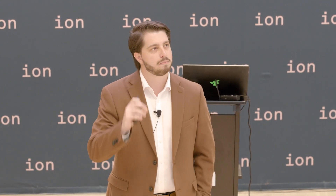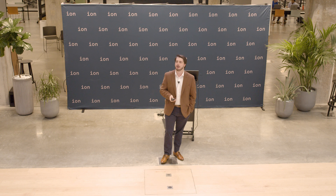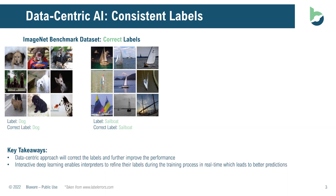Rather than focusing on the algorithm — whether it's a U-Net or an E-Net — we focus on the labels and try to make those as best as possible. You train the model, do your error analysis, and then you tune your data and fine-tune your labels. That's the key difference between model-centric versus data-centric, and that's what we're doing at BlueWare. Specifically, this allows us to do something we call interactive deep learning, where you're fine-tuning that data in real time.